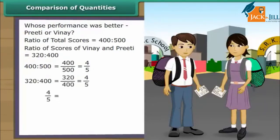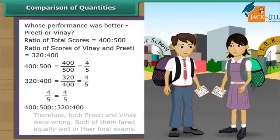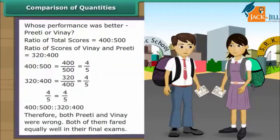It means the two ratios are in proportion. Therefore, both Preeti and Vinay were wrong. Both of them fared equally well in their final exams.